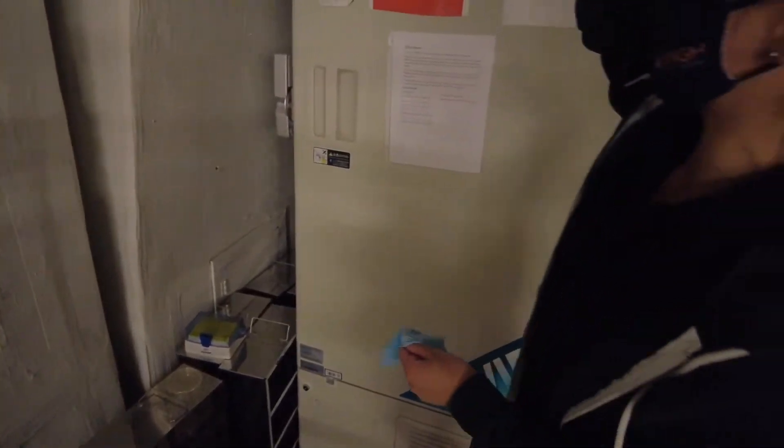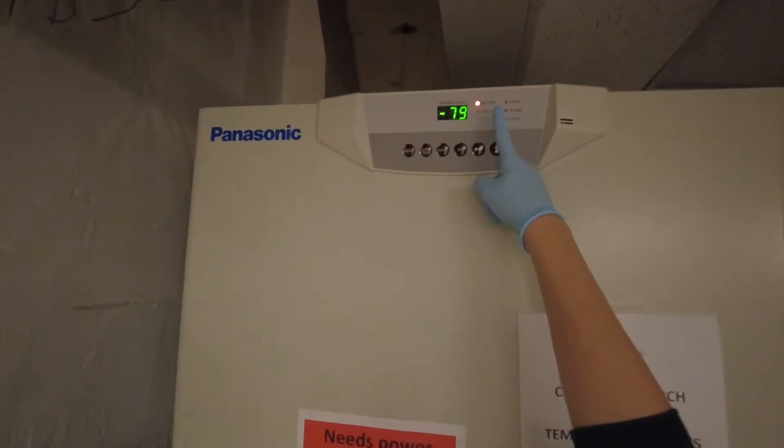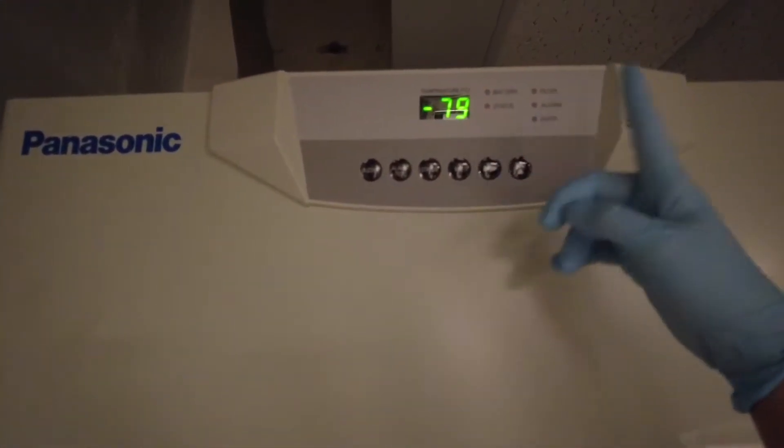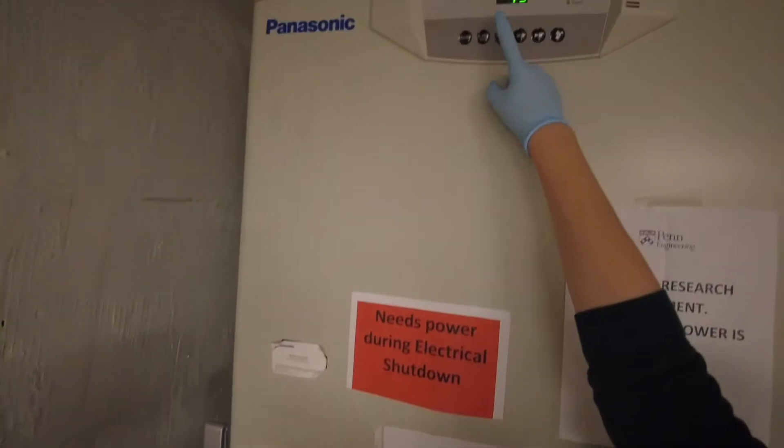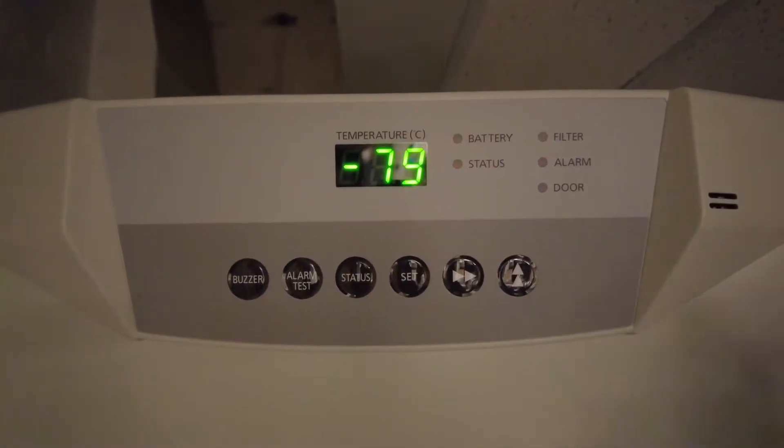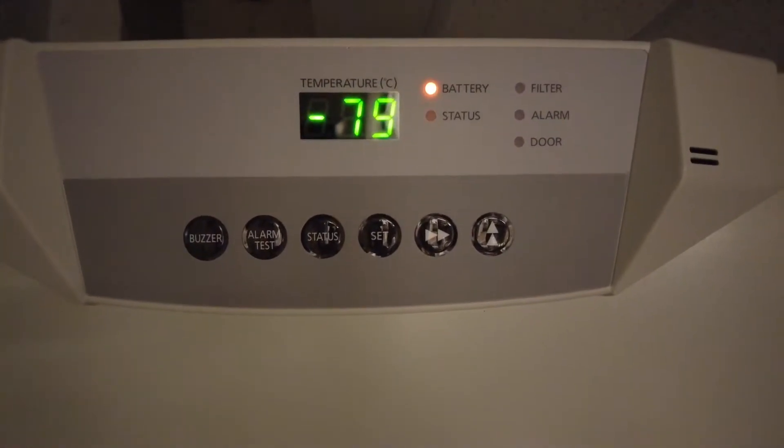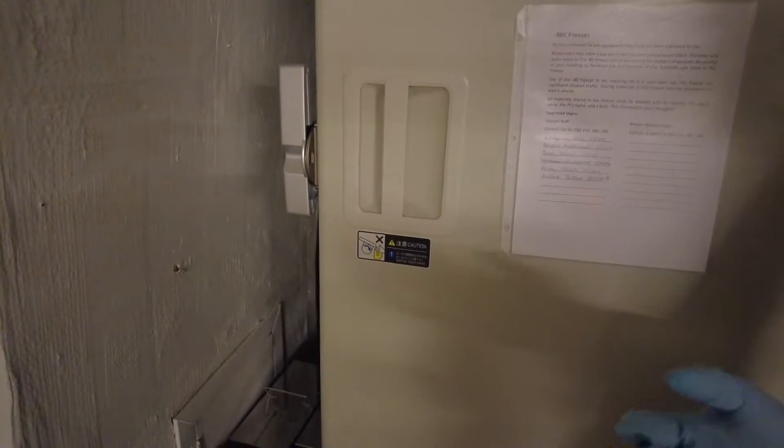This is the minus 80 freezer. The temperature indicator is here. It always has this battery light flashing, but it's not your responsibility to change the battery. But if it gets crazy, let someone know. Make sure this number is around minus 80. If it gets too high, like minus 60 or something, also let someone know. You want to have this thing open for as short amount of time as possible.